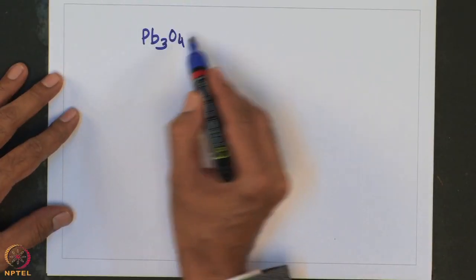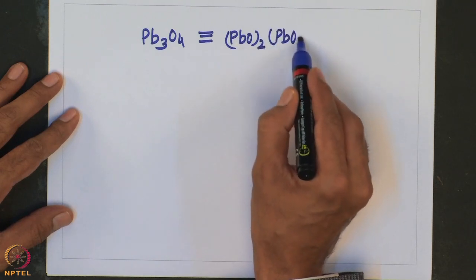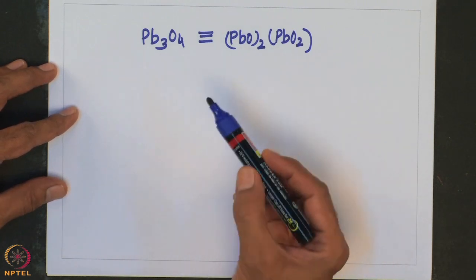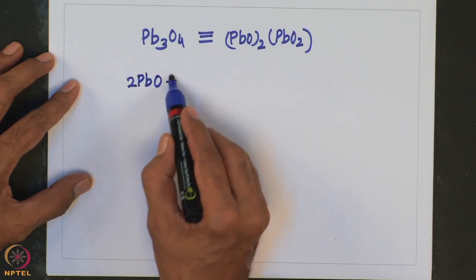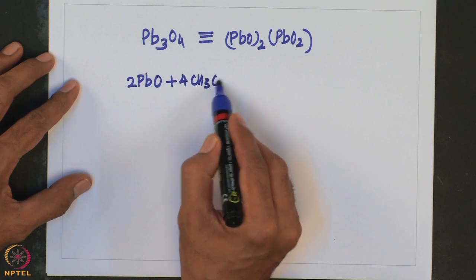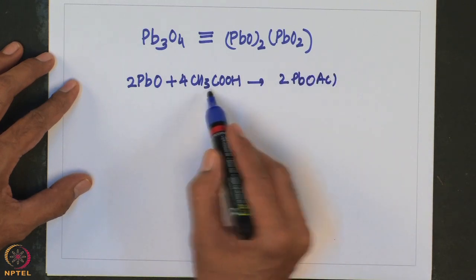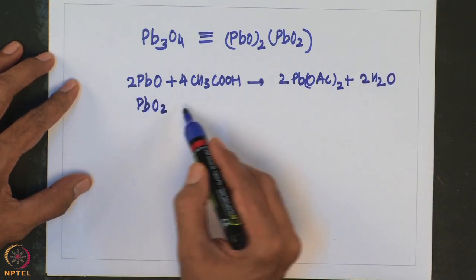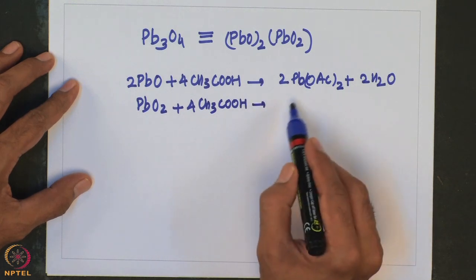The composition of Pb3O4 is essentially a combination of 2 PbO and 1 PbO2, meaning two lead atoms in the +2 state and one lead atom in the +4 state. Looking at the reactions: 2 PbO with 4 equivalents of acetic acid gives lead diacetate, and PbO2 with 4 equivalents of acetic acid gives lead tetraacetate.